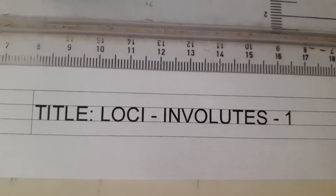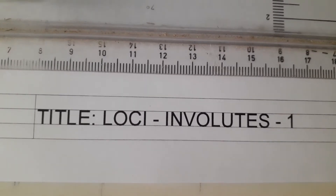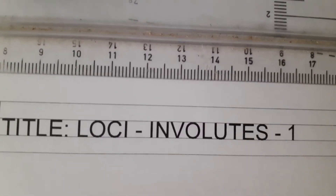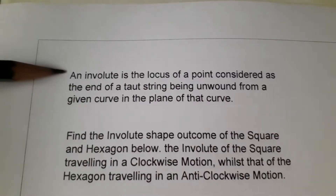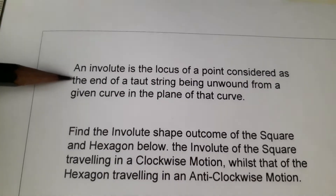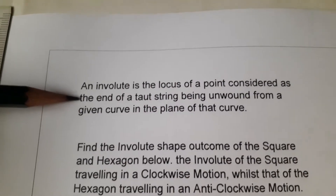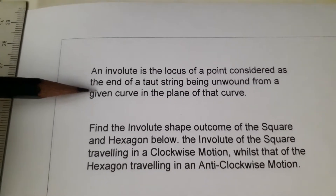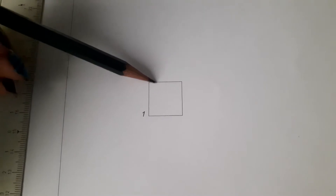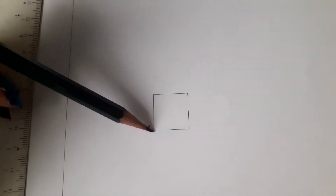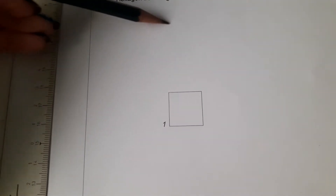We finished helices and now we're moving on to involutes. There are two types: clockwise and anti-clockwise. An involute is the locus of a point at the end of a taut string being unwound from a given curve in the plane of that curve. For example, imagine you have a taut string around a square — we're going to see how it unwinds from the square.